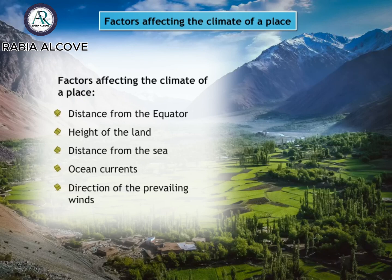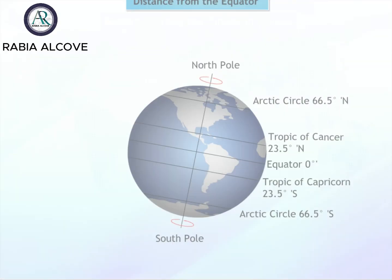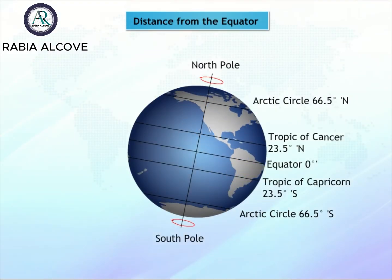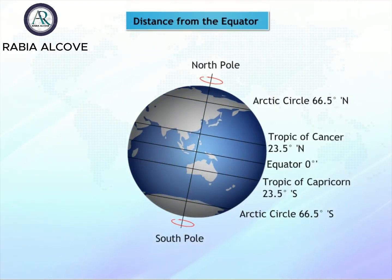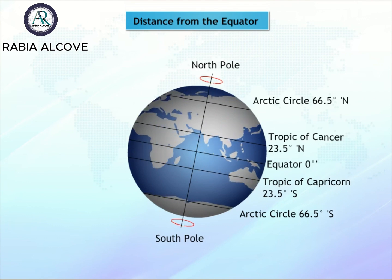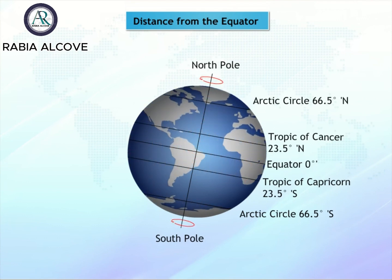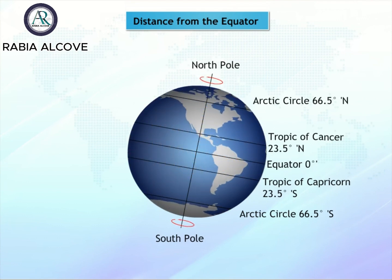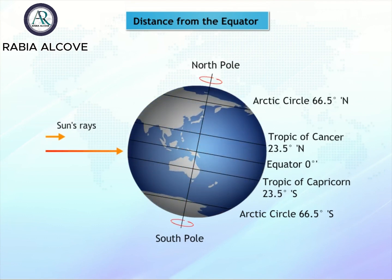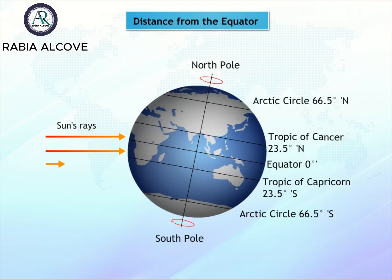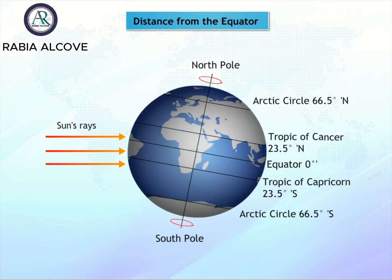Places near or on the equator are hotter than places which are away from the equator. This is because sunlight falls directly over the equatorial region and so the intensity of heat is high.